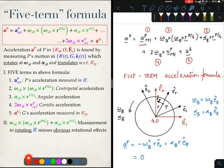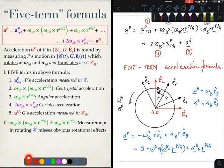That means that the first term a_P_rel will be zero. I am now writing down terms coming from this. The second term will be ωB × (ωB × r_PG). The third term will be αB × r_PG.